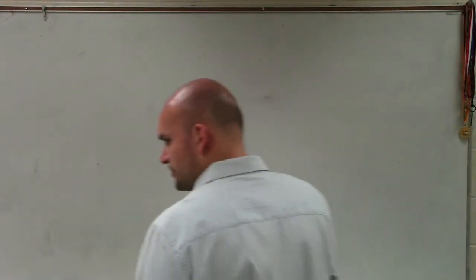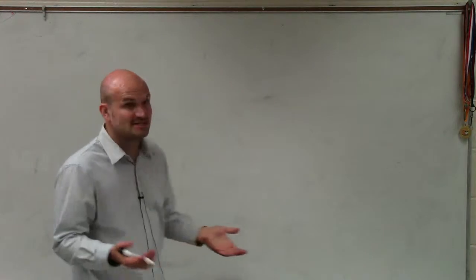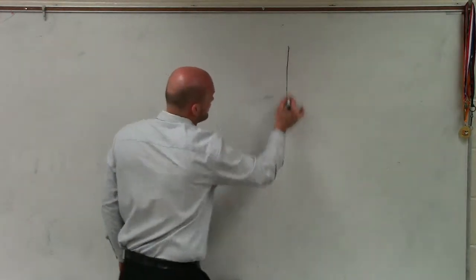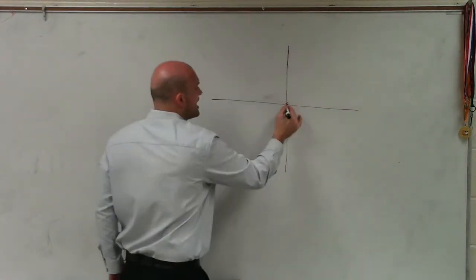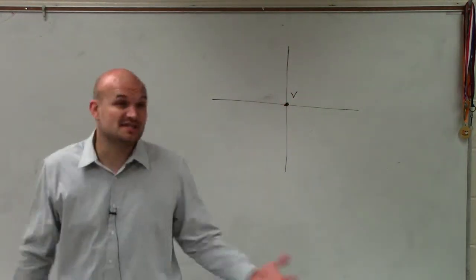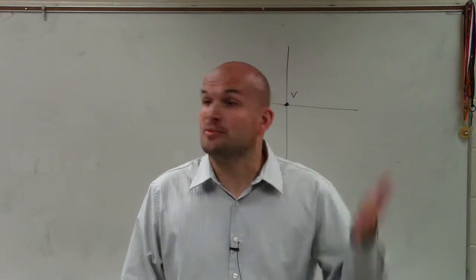Problems 33 through 37 say the vertex is at (0, 0). So first thing I would do is plot the vertex. Now, since we know the vertex, there are two types of parabolas we can have — we can open left or right, or it could open up or down.